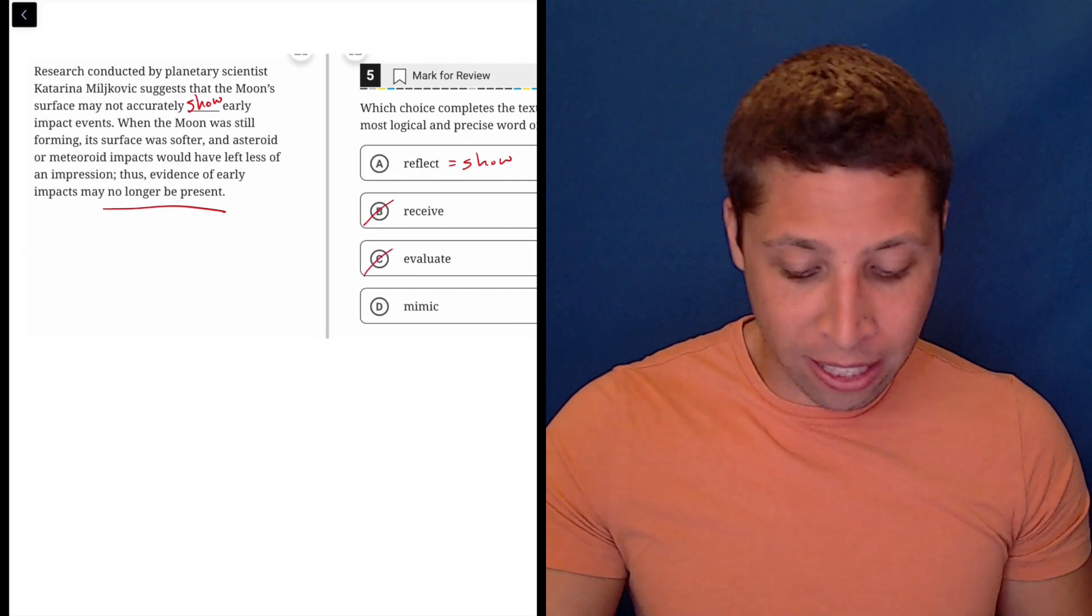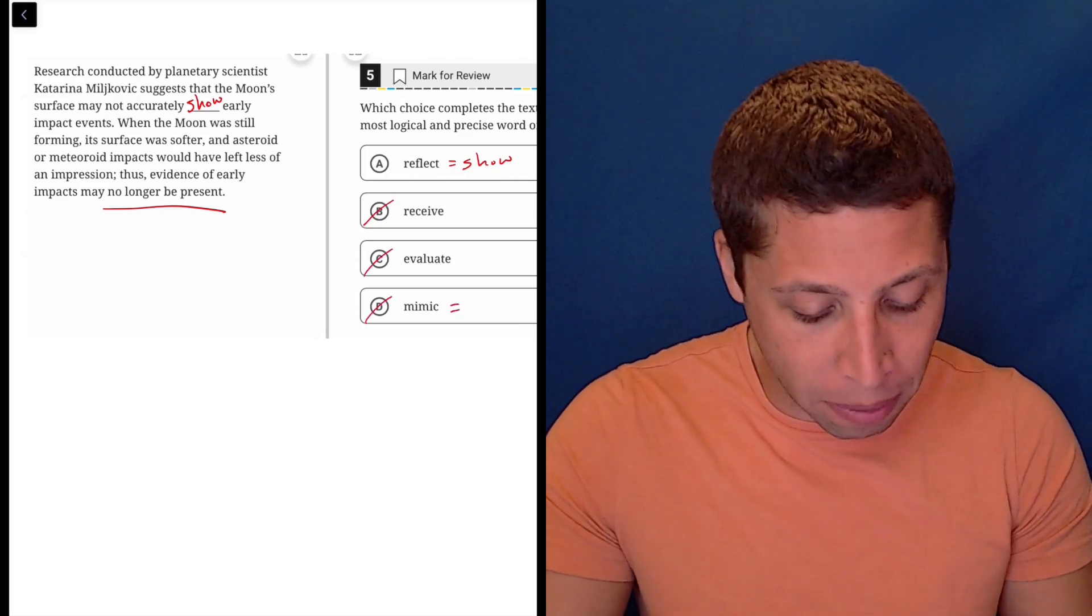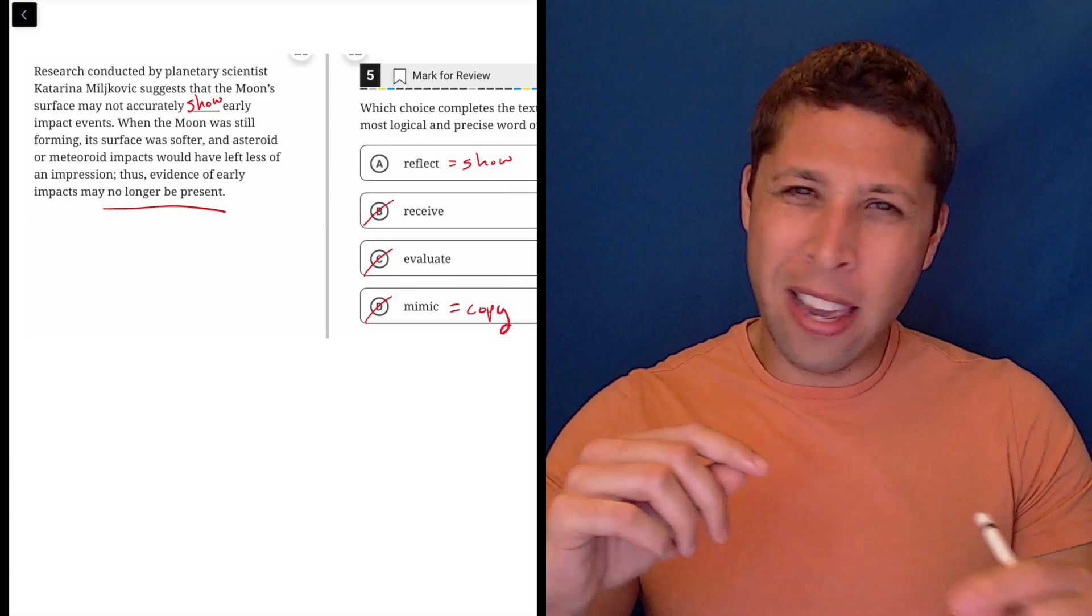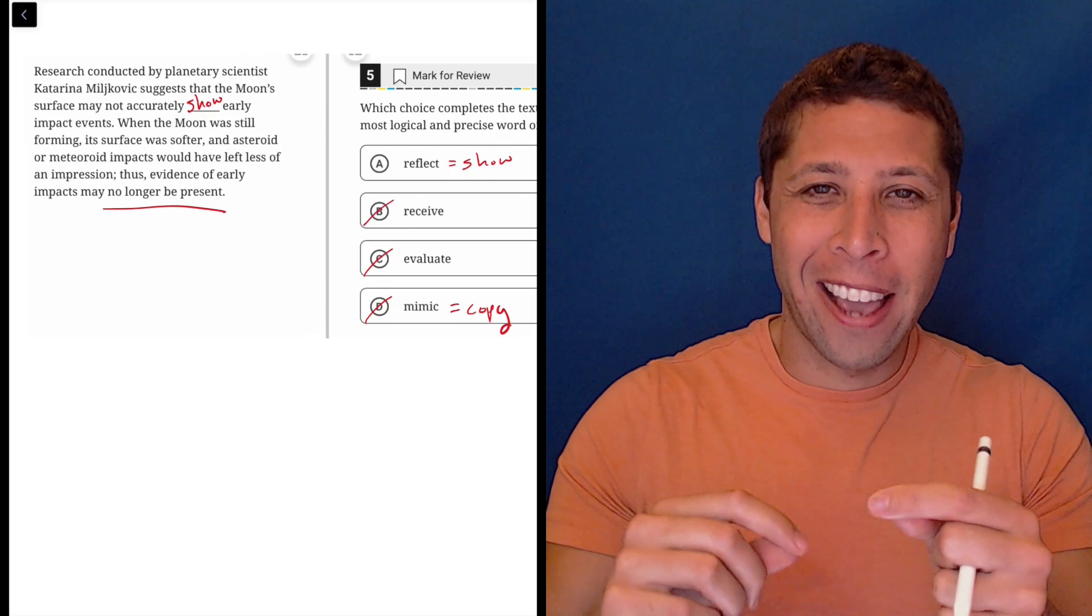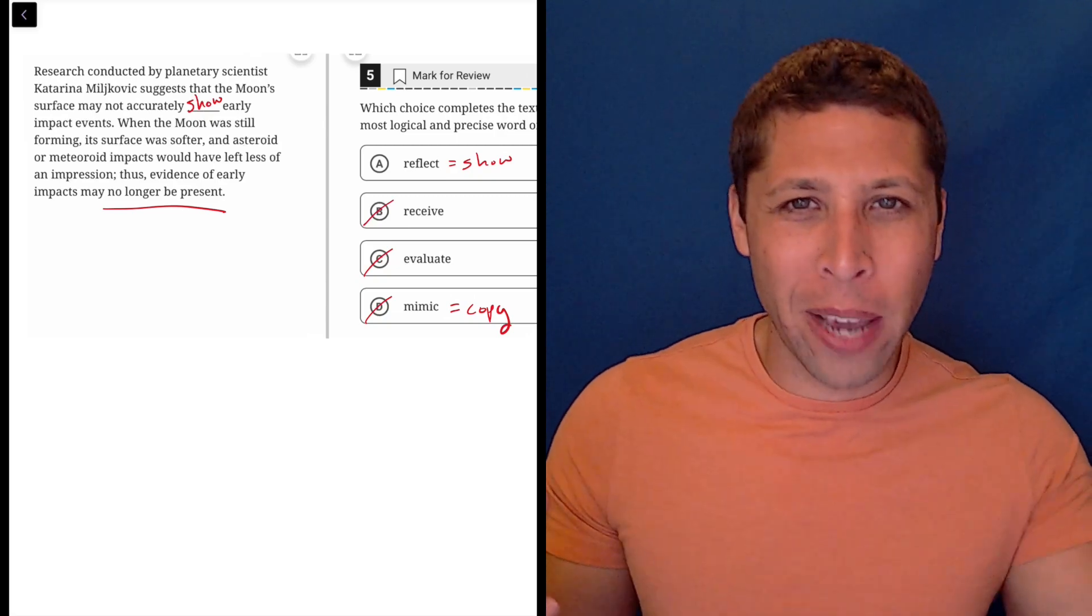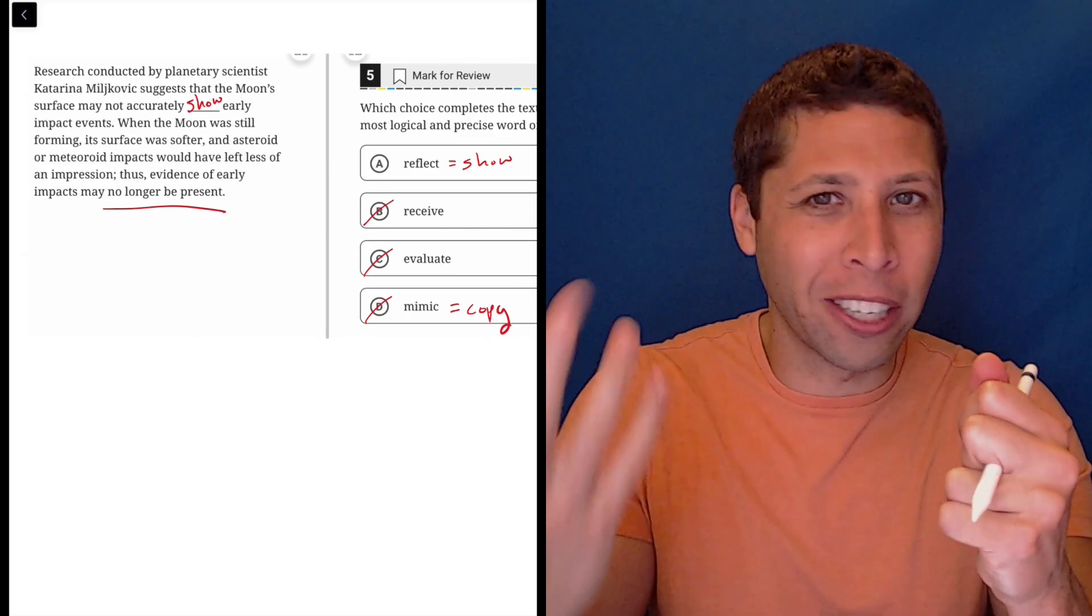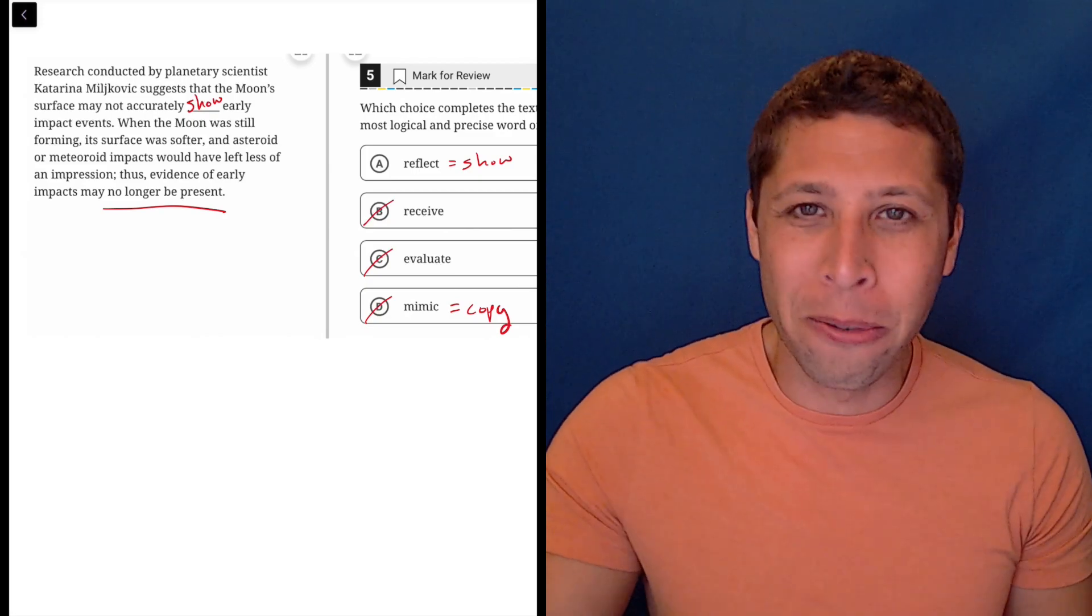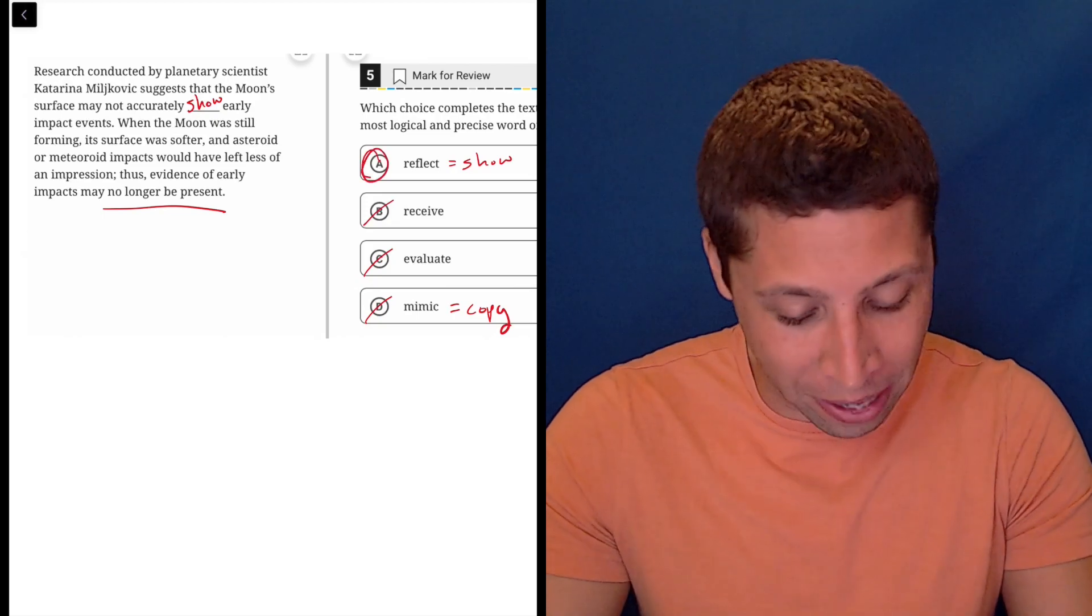So that doesn't make any sense. And it certainly can't mimic anything either. To mimic means to copy. So the event happens and then it leaves a mark. There's no mimicry going on. It's not like if you hit with an asteroid over here, you're going to have like another crater that's mimicking that one. That's not how the moon works. So this word just makes no sense.